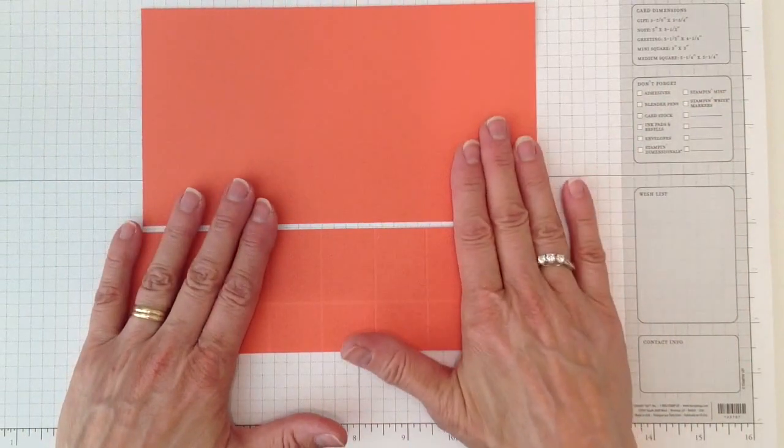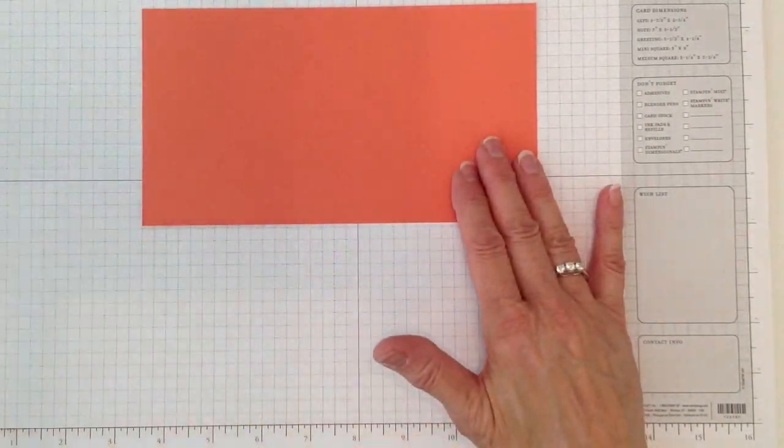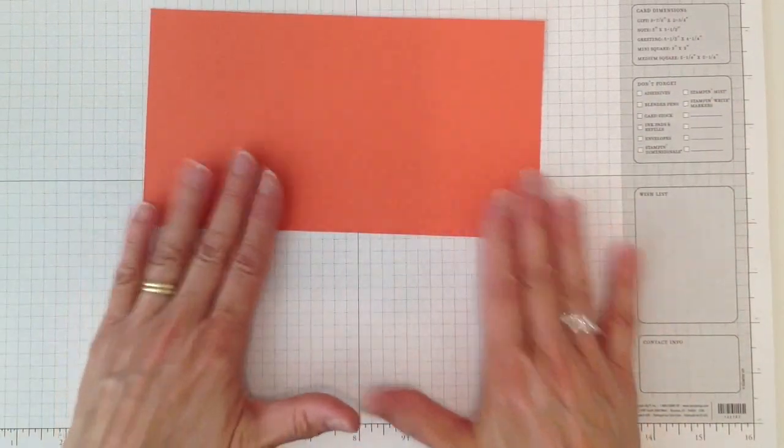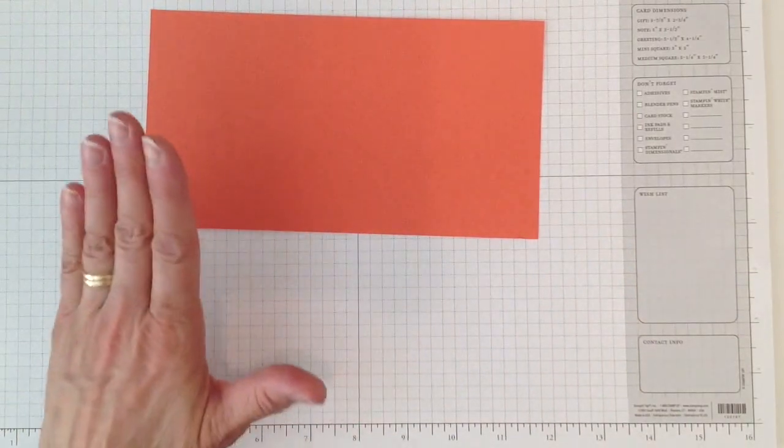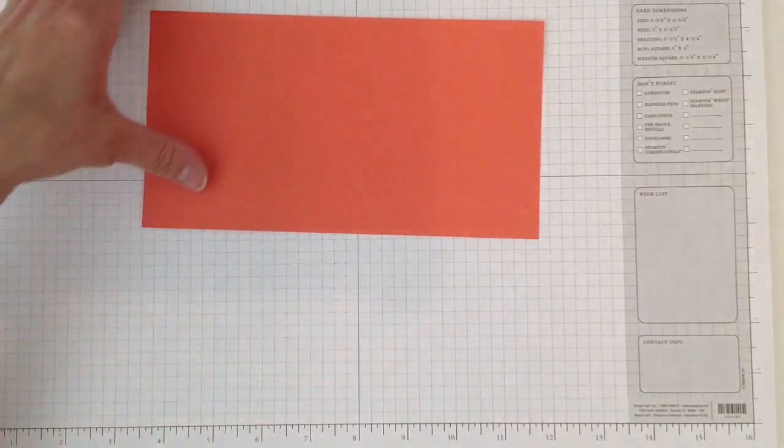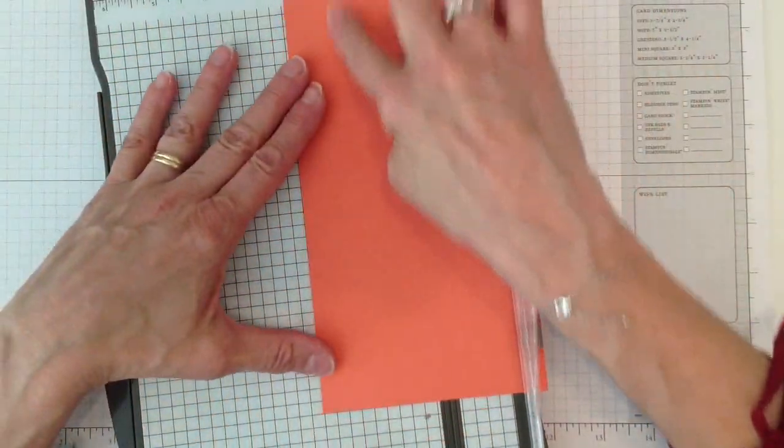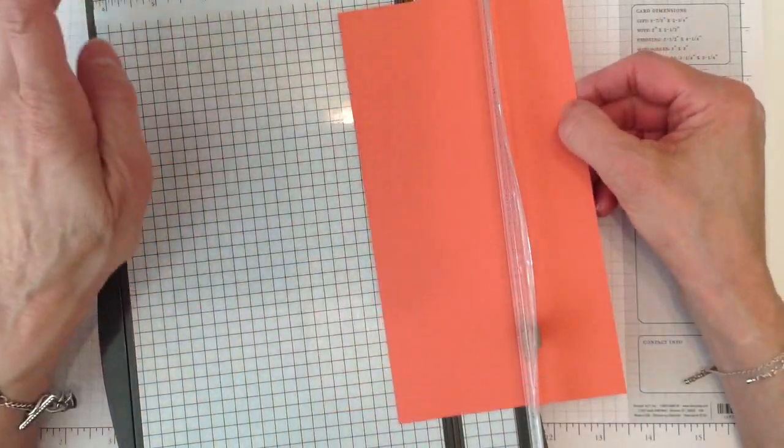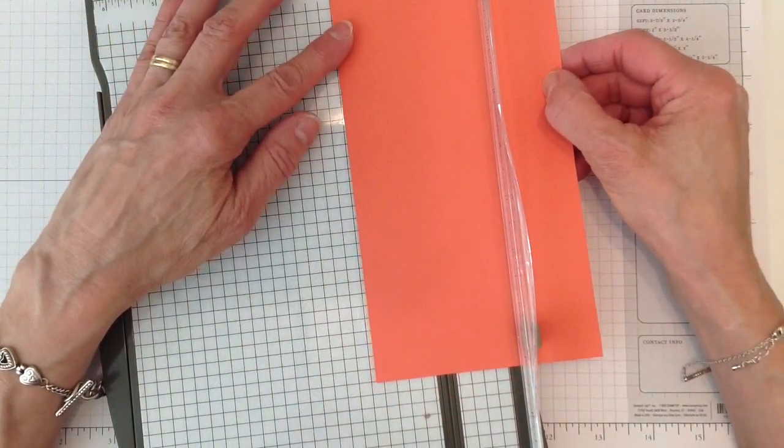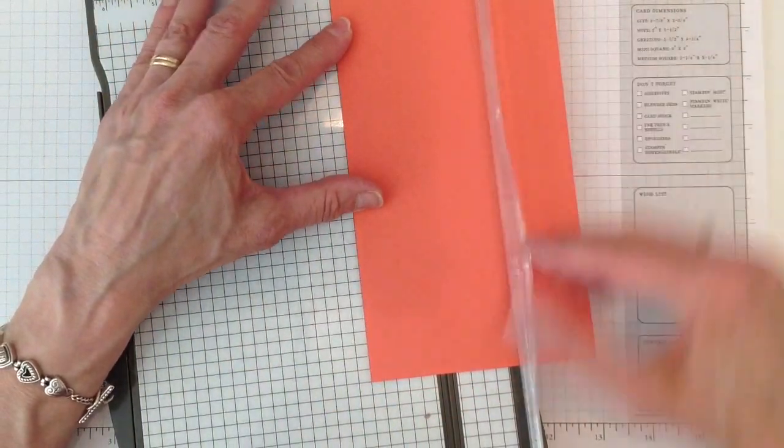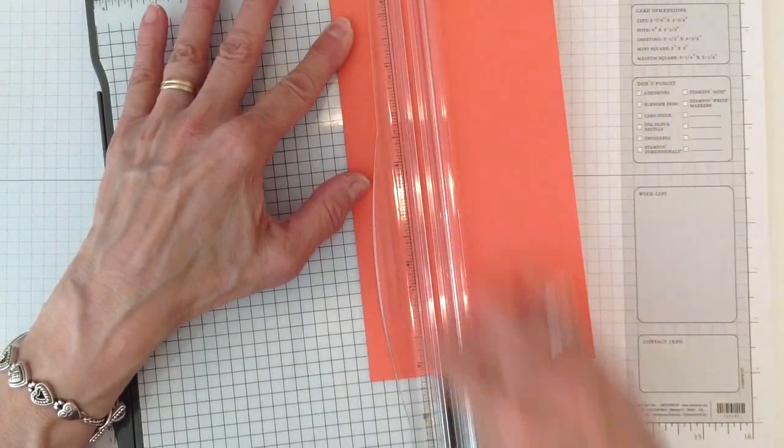So we're going to get started, and I'm going to show you the bottom part of the box first. So we're going to take this eight and a quarter by four and a half. The first thing we're going to do is we're going to score down this long side, and we're going to score it at one and a half. So let's do that.